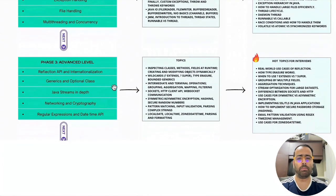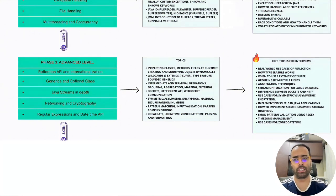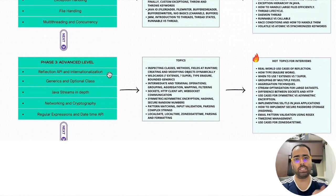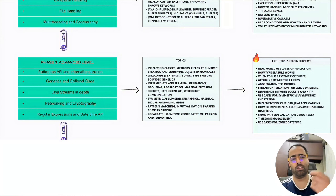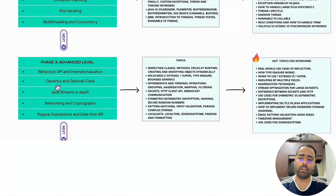In the advanced level, there are different APIs depending on use case. First is the Reflection API — you should know its use cases and how to use it. Then the Internationalization API, which lets you handle multiple languages and time zones on your website, such as converting content from English to Hindi. The next important topic from an interview perspective is Generics and the Optional class — you should have a deeper knowledge of Generics since they are used everywhere in frameworks like Spring Boot and Spring WebFlux.